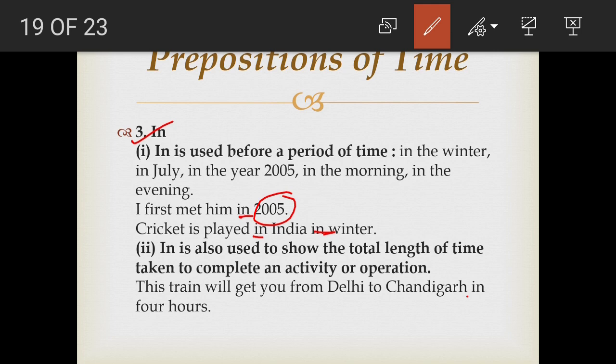'In' is also used to show the total length of time taken to complete an activity or operation. For example, 'The train will get you from Delhi to Chandigarh in four hours.' Here, four hours is the total time for the journey from Delhi to Chandigarh. So to describe the total length of time taken to complete an activity, we use the preposition 'in.'